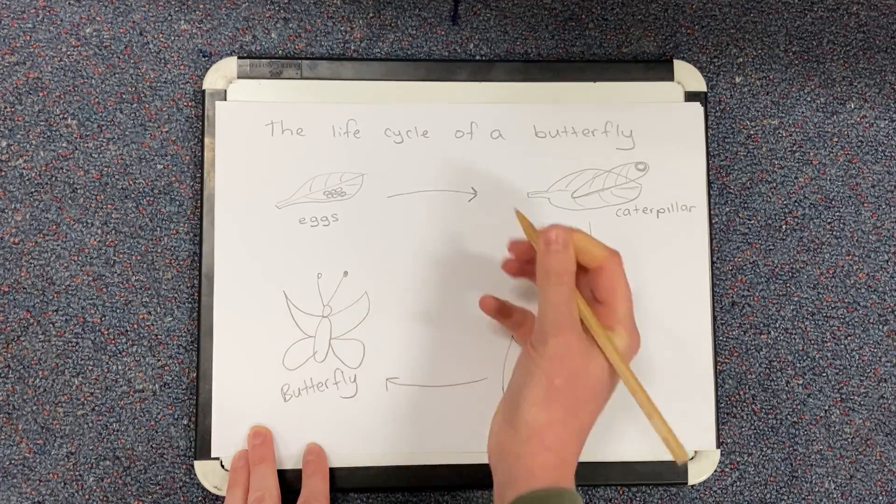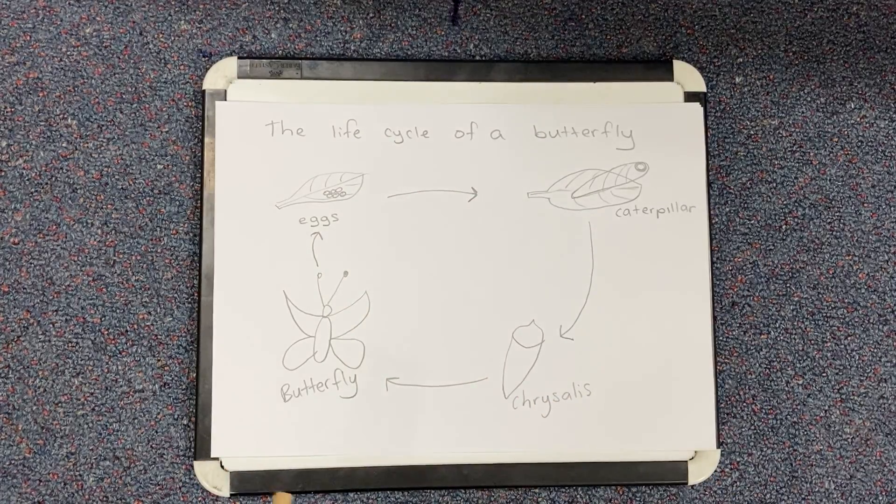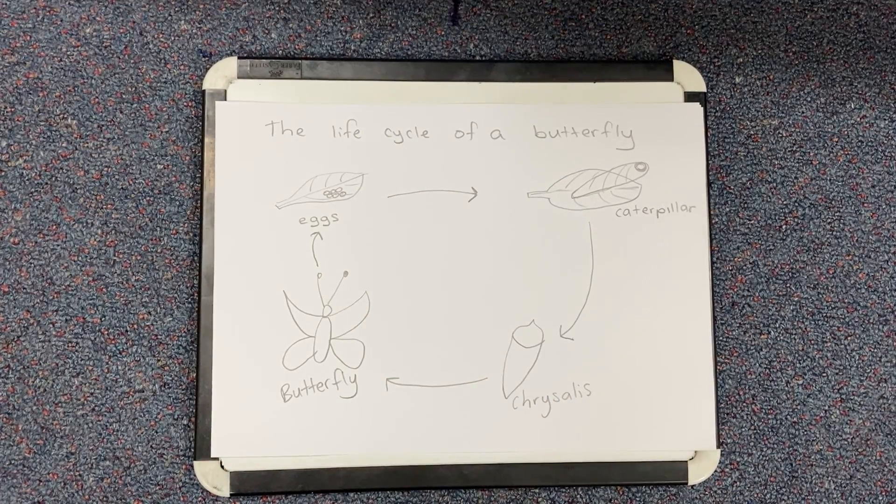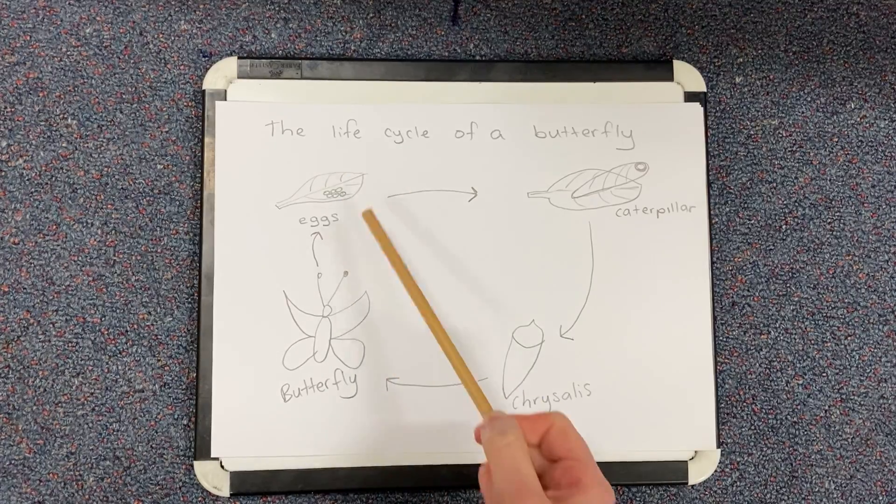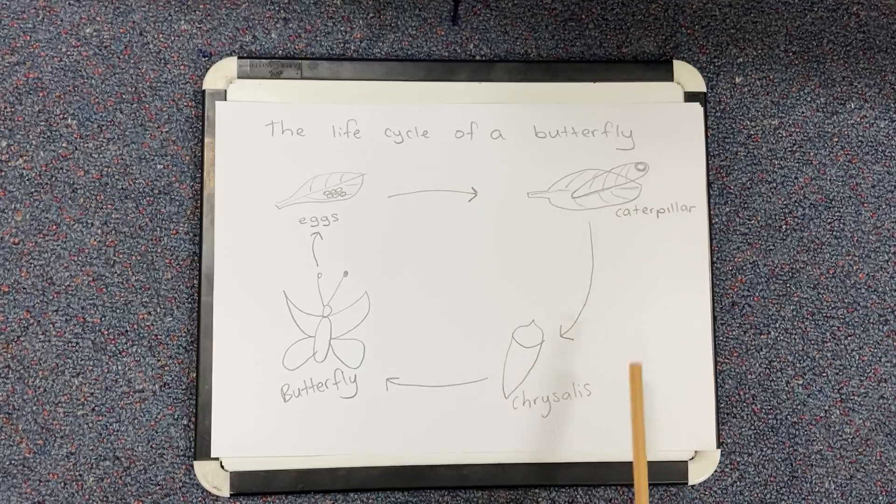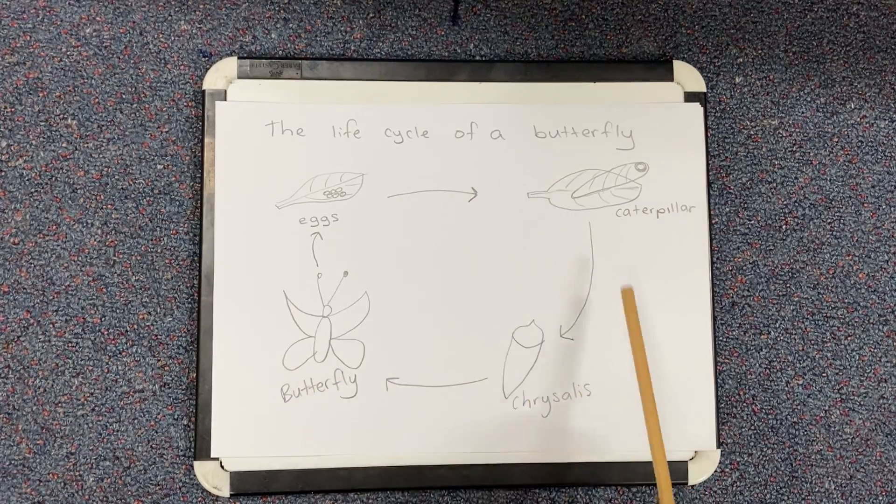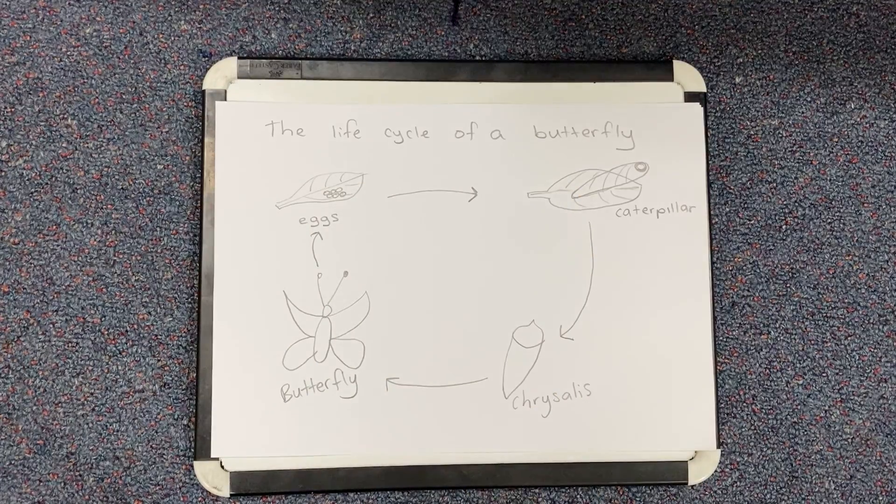And then I need my last arrow to go back to my eggs because you'll see that the life cycle continues. So then the butterfly has some eggs again. And then the eggs hatch to the caterpillar. It goes back to the chrysalis. Back to the adult butterfly. And then it goes round and round and round.